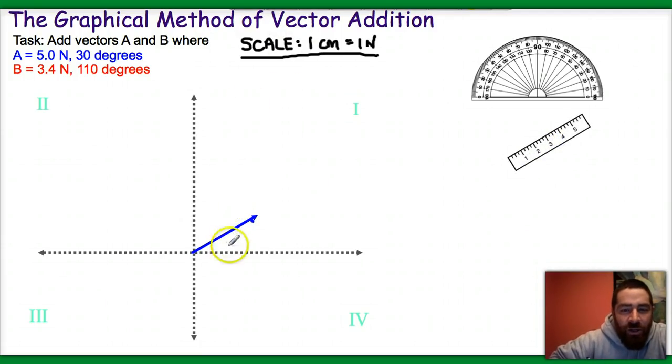I could label it if I want to, which I'll go ahead and do here. So now I've drawn in vector A, and I need to do the same thing with vector B.